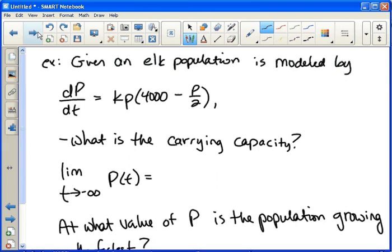We could rewrite this in the more traditional format with the 1 minus by factoring 4,000 out. But we're not going to bother doing that. This is still logistic. Okay? So, the question is, what number would we plug in for p right here, saying for the population of elk, to make the part in parentheses equal to 0? Well, that would be 8,000. Because 8,000 over 2 is 4,000. And then 4,000 minus 4,000 is 0.